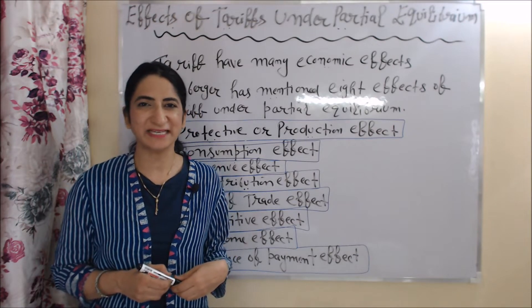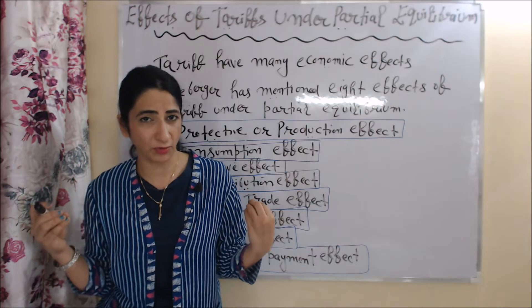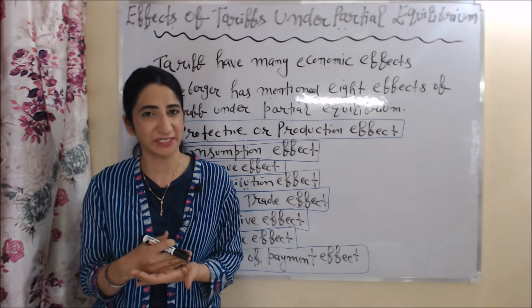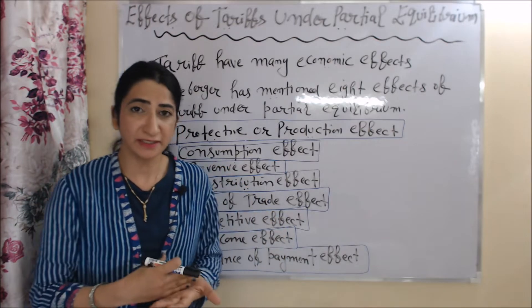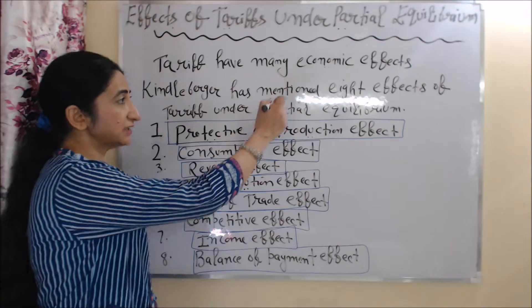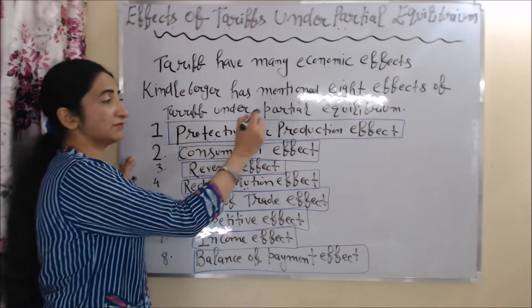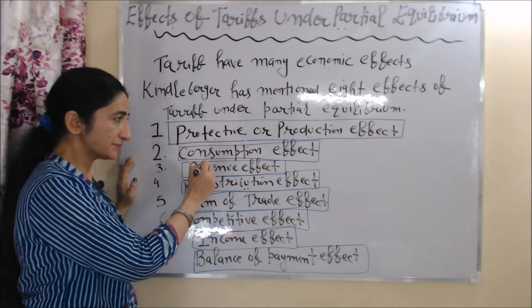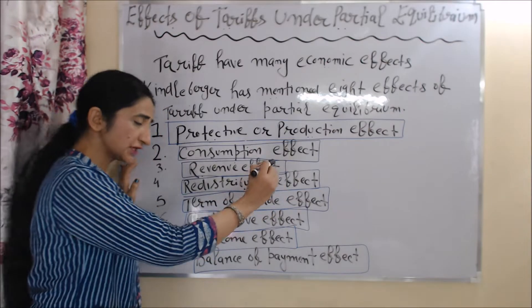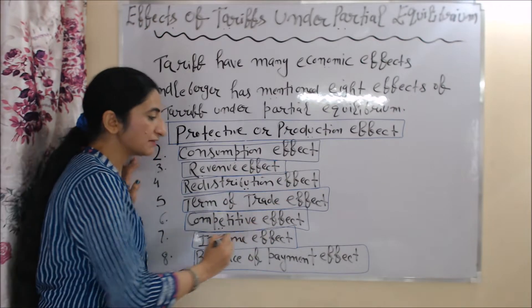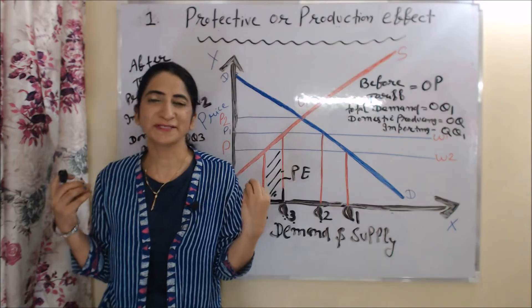Hello everyone, my name is Mini Seti. I hope you all are staying healthy. Today we are going to talk about effects of tariff under partial equilibrium. As we know, tariff has so many economic effects. Kindleberger mentioned eight effects of tariff under partial equilibrium: protective or production effect, consumption effect, revenue effect, redistribution effect, terms of trade effect, competitive effect, income effect, and balance of payment effect. We will discuss each effect one by one.